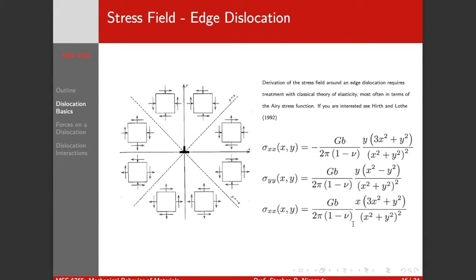But the stress field has a form that looks like this. You don't have to memorize this, but you should know basically which terms are important. Now what you see is the components of the stress. The state of the stress that you see is very different as we move around the dislocation. This gives the normal stresses - we don't have any out-of-plane stresses.